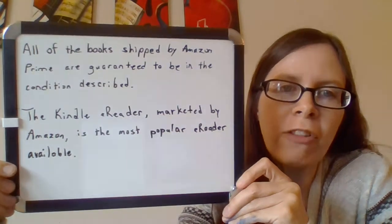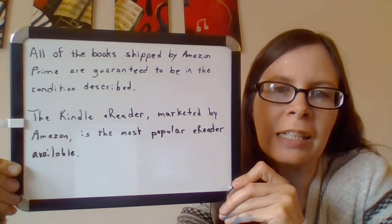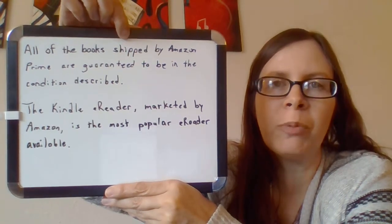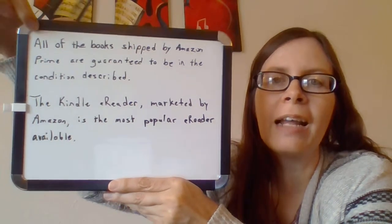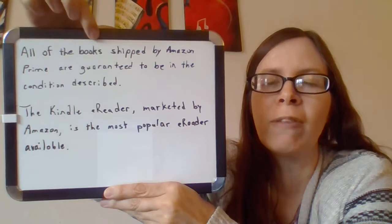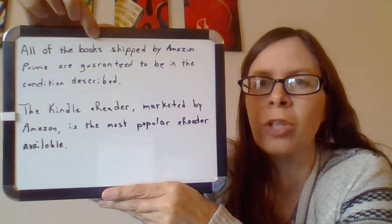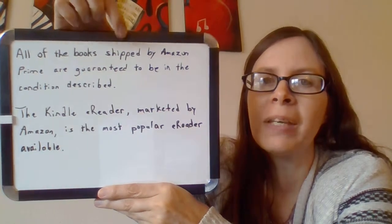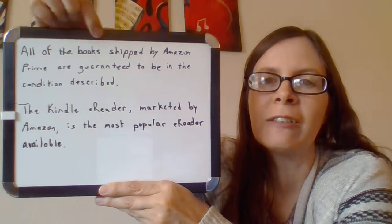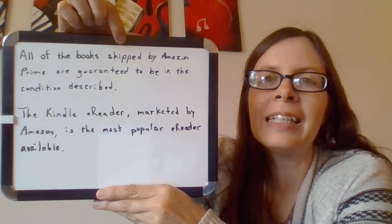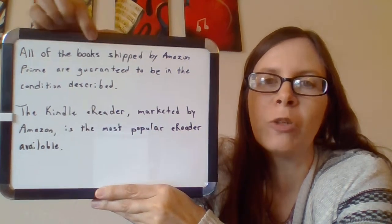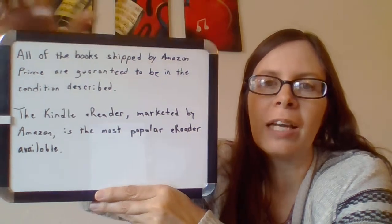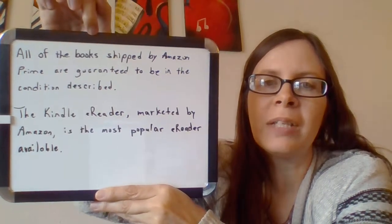Look at this example: 'All of the books shipped by Amazon Prime are guaranteed to be in the condition described.' The word 'shipped' is usually a verb, but here it's describing the books — which books? We can't just say 'all of the books are guaranteed to be in the condition described' because we don't know which books. So we have to have this participial phrase 'shipped by Amazon Prime' to tell us which books. It's essential, and therefore does not receive commas.